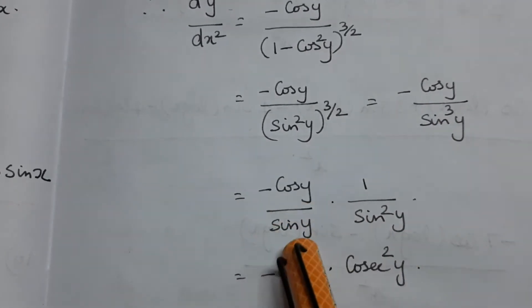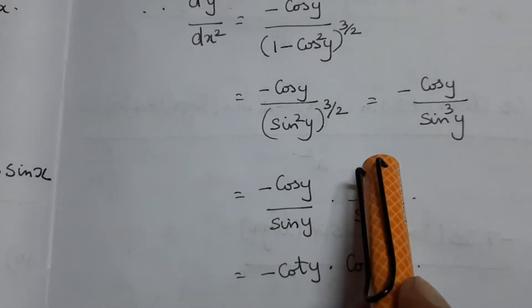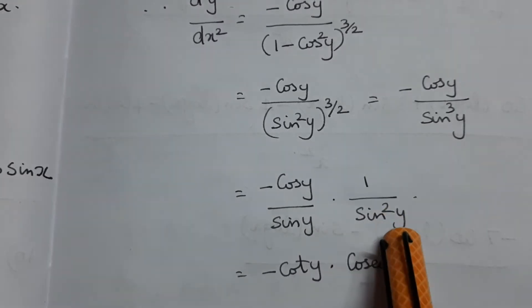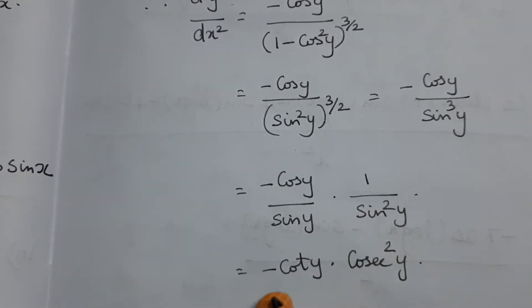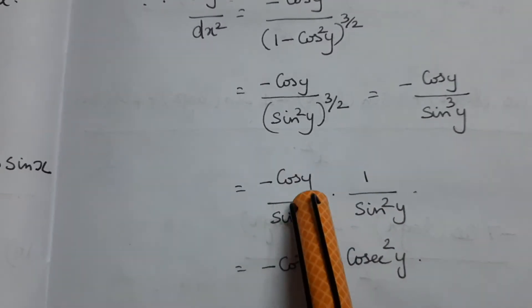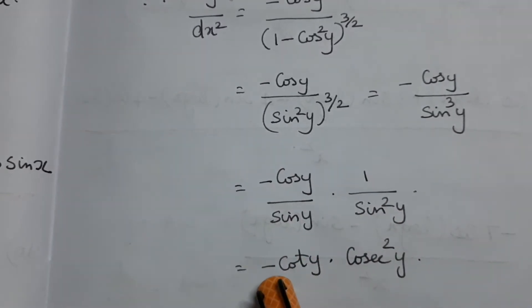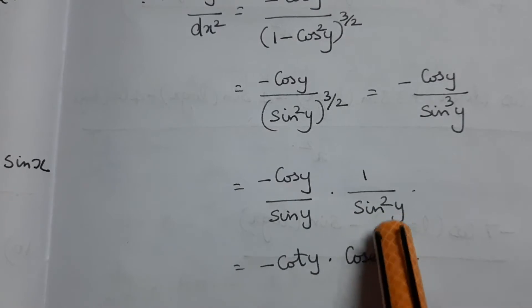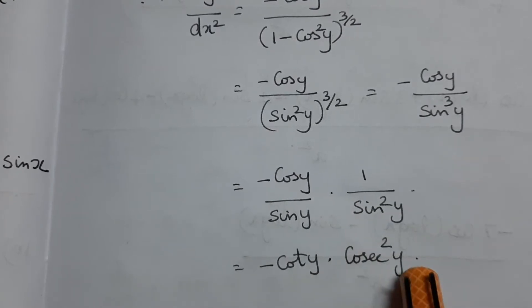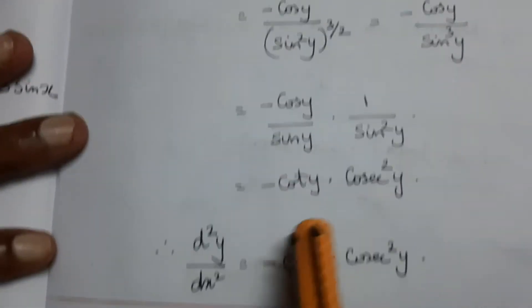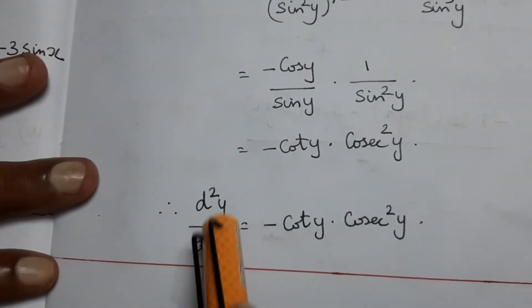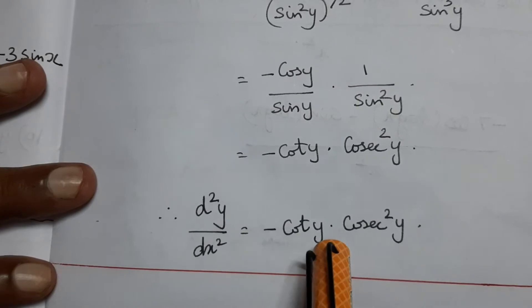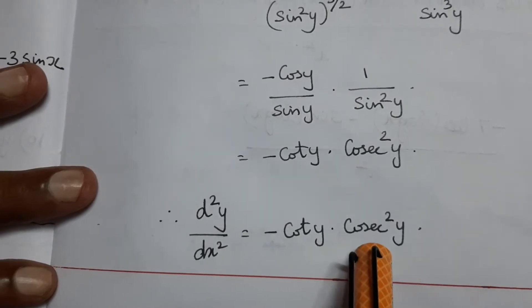Further simplification gives minus cos y times 1 by sin square y, which equals minus cos y by sin y into 1 by sin square y, yielding d²y/dx² equals minus cos y divided by sin cubed y.